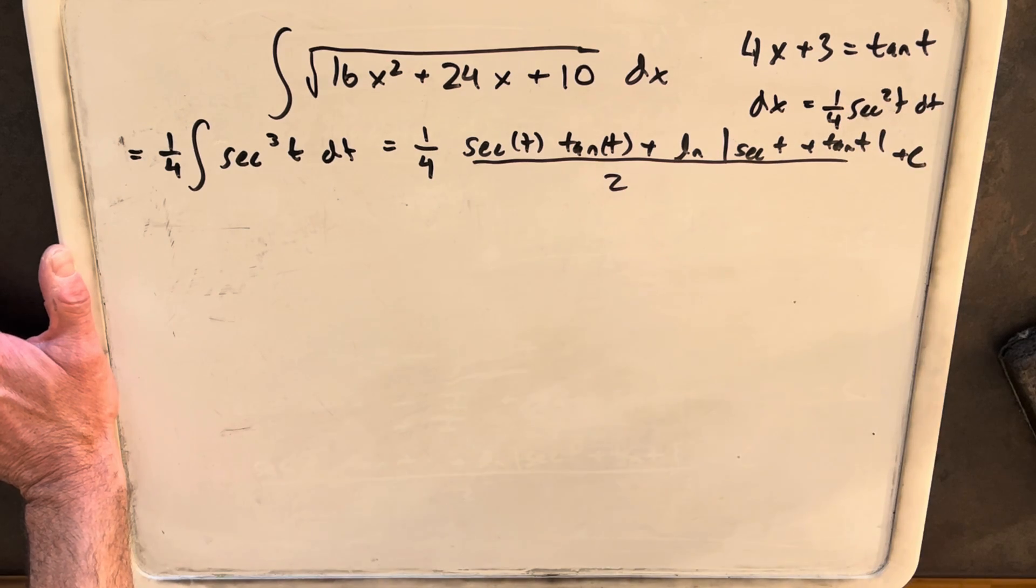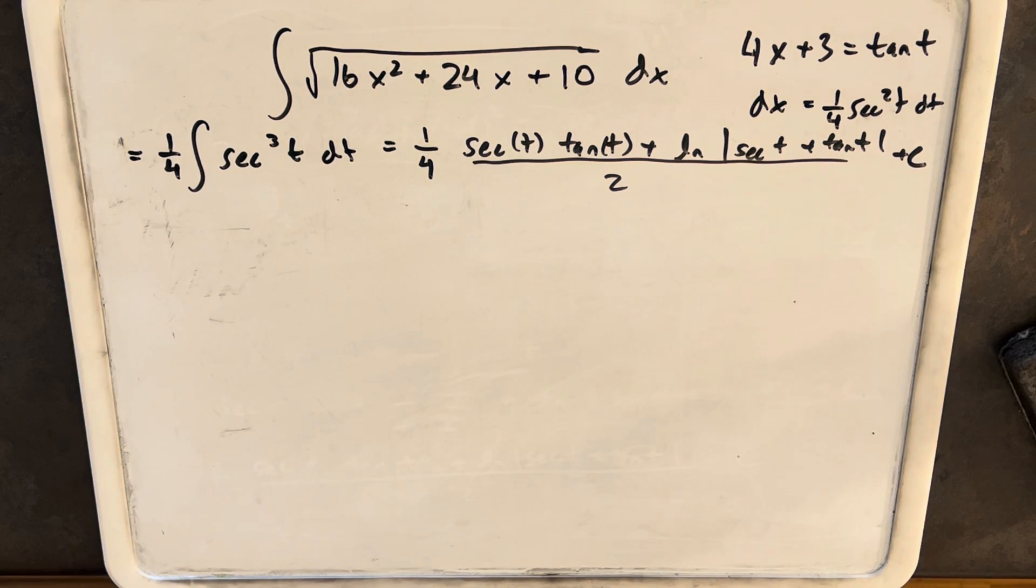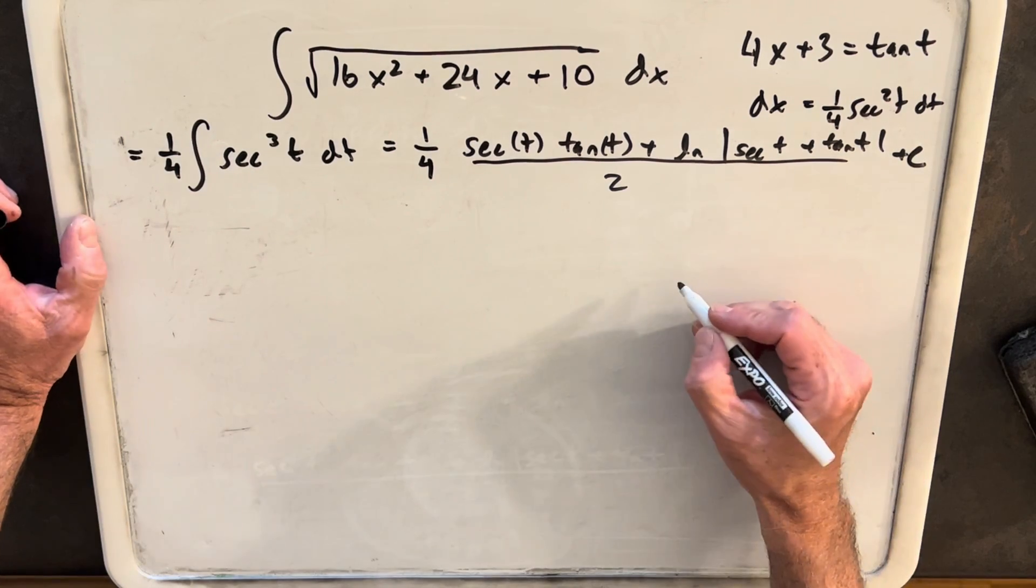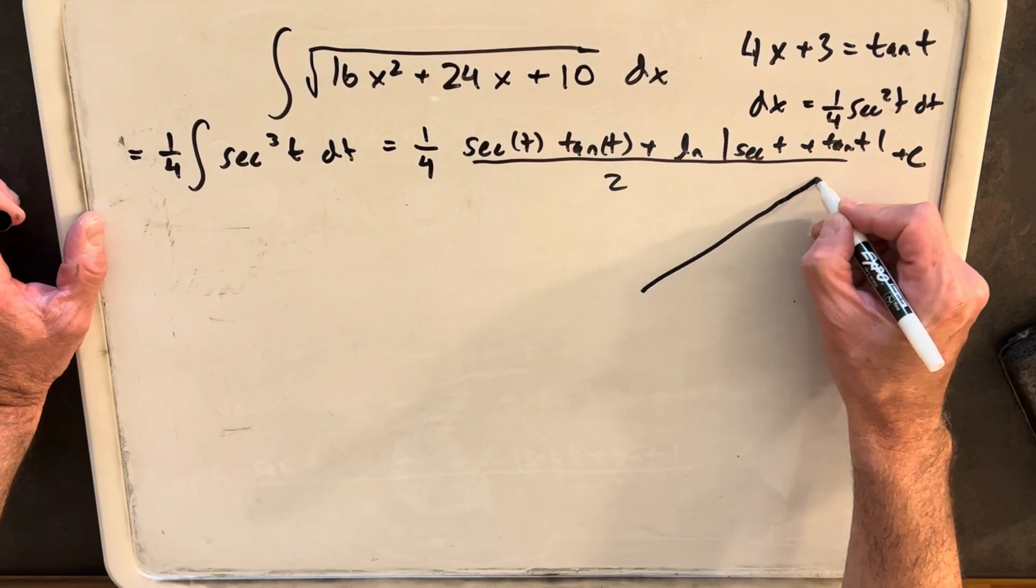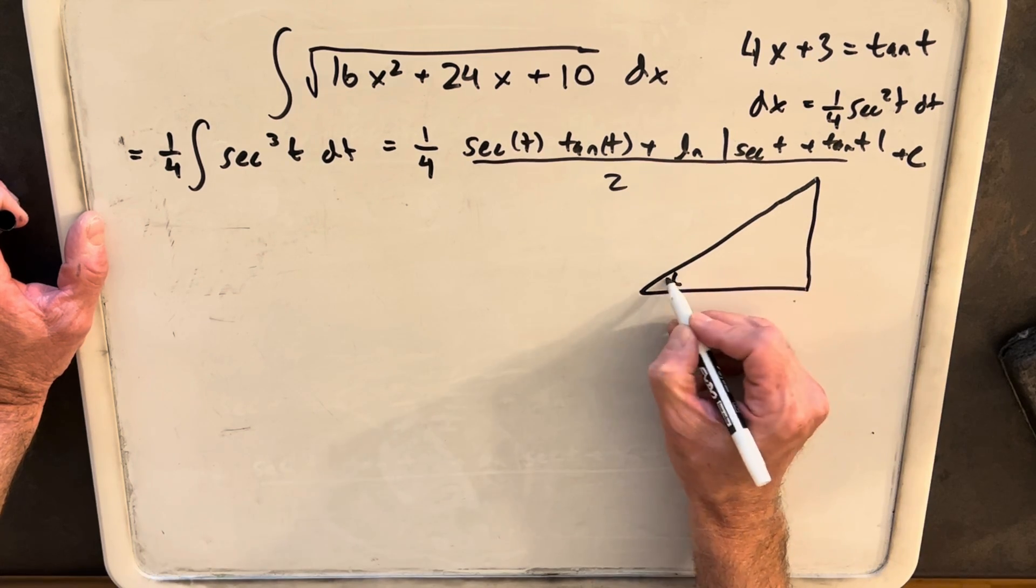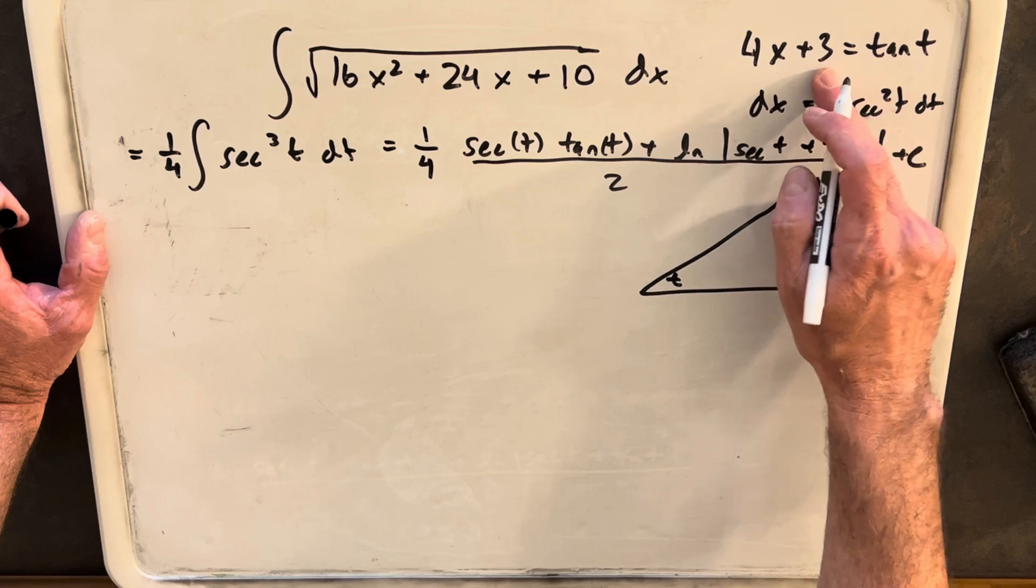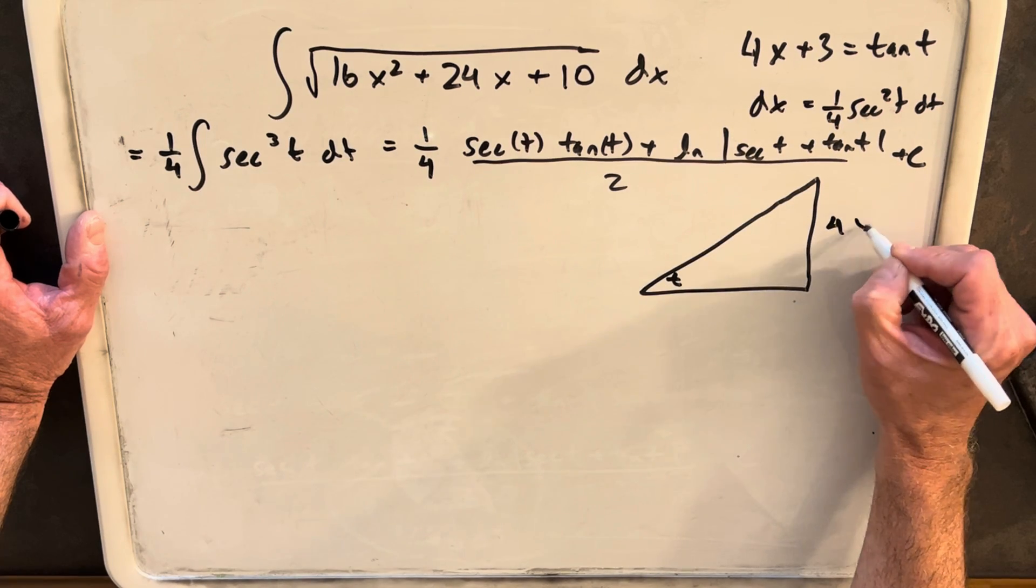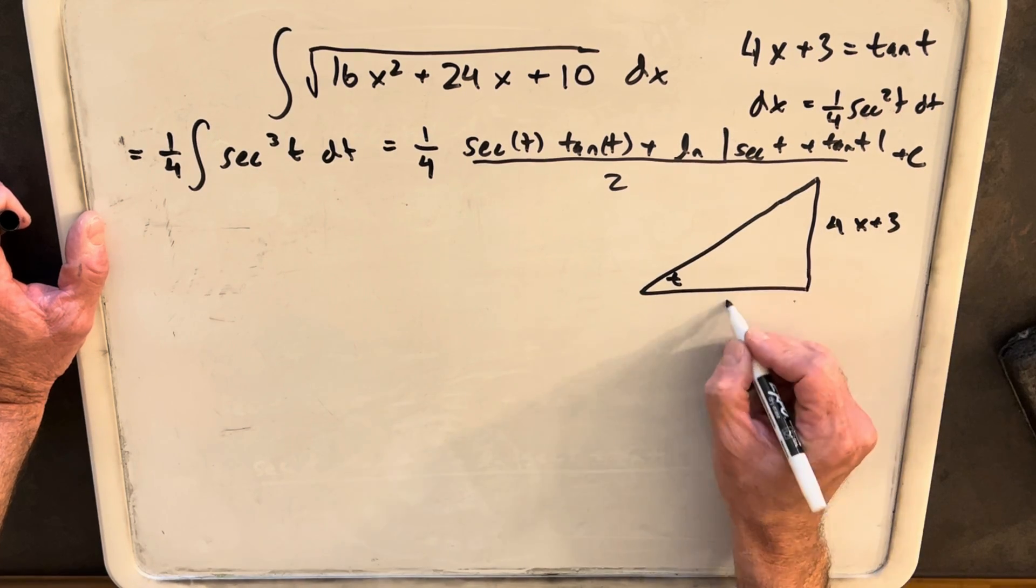We already have tan of t. We already have tan of t, but we want to find secant of t. And what we can do is draw a little triangle. So if we have an angle t, if tan is 4x plus 3, we can write this as 4x plus 3 over 1.